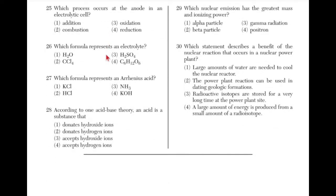Which process occurs at the anode in an electrolytic cell? The answer is 3: oxidation will occur at the anode. You can remember 'RedCat' and 'OxAn' — at the cathode, reduction will occur, and at the anode, oxidation will occur. The anode is the source of electrons, and the anode is the negative terminal.